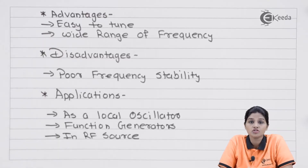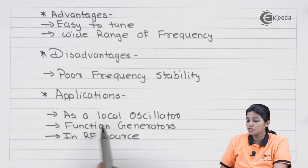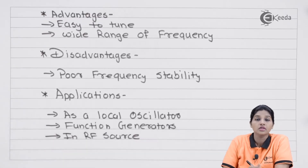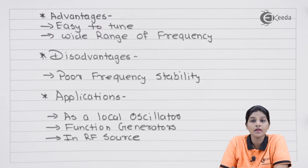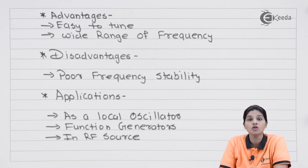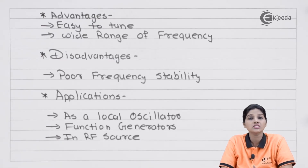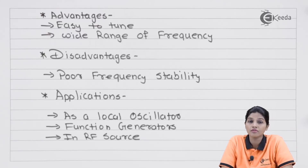There are various applications of the Hartley oscillator using op-amp. It is used as a local oscillator in TV receivers or radio receivers. It is used in function generators for providing various waveforms of any desired frequency. It can also be used as an RF source. Generally, the applications of oscillators include use as a waveform generator and as a local oscillator for providing frequencies of different values.